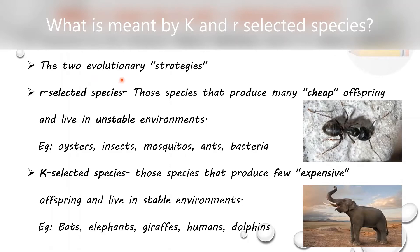R selected species are those species that produce many cheap offspring and live in unstable environments. R selected species are mainly early organisms and they produce many low-investment offspring. That means their energy investment for reproduction is very low, so they will produce many cheap offspring living in unstable environments.